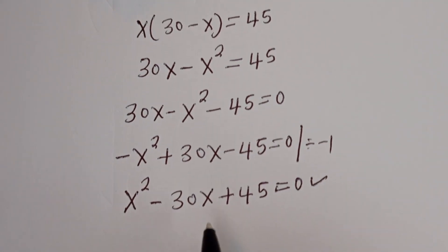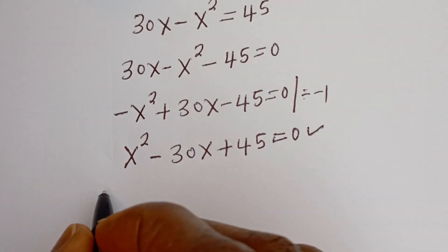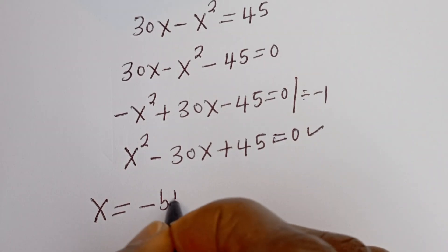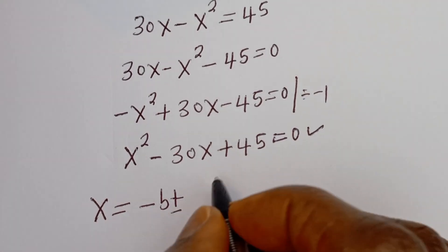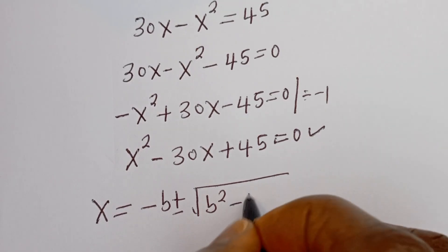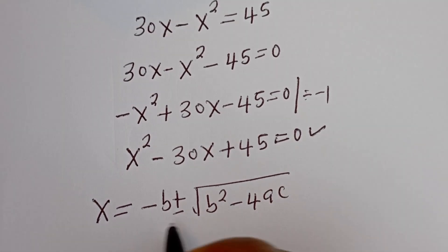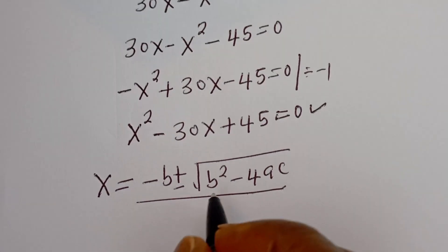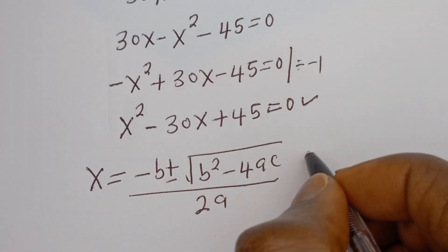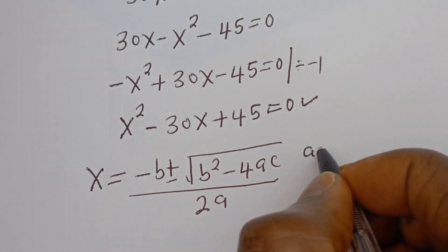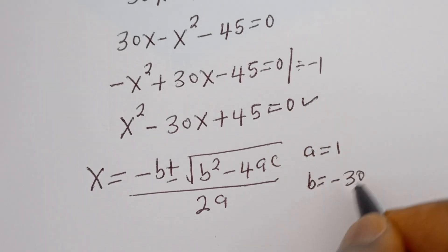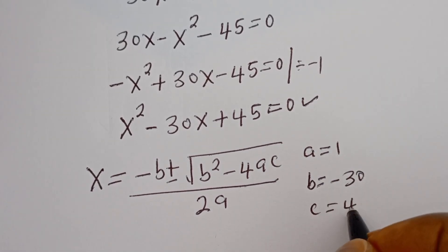This is a quadratic equation, which can be solved using the quadratic general formula: x is equal to minus b plus or minus square root of b squared minus 4ac, divided by 2a. From this equation, a is equal to 1, b is equal to minus 30, and c is equal to 45.